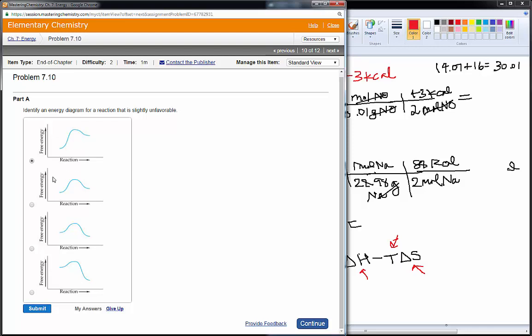These would be positive delta Gs. This would be non-spontaneous, or endergonic. And they want the one that is slightly unfavorable. So, a very small difference in delta G. This is a very large difference in delta G. So, they want this energy diagram.